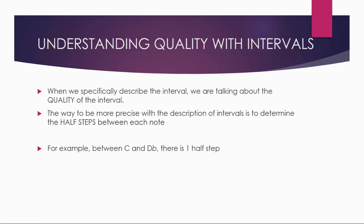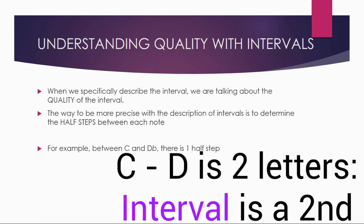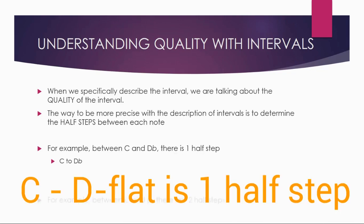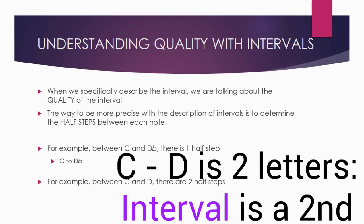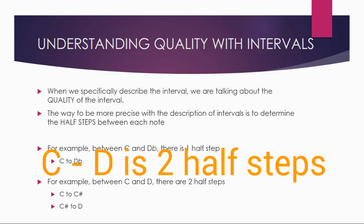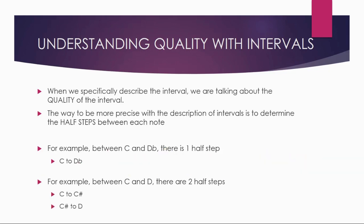So we'll start real easy. Between C and D flat there is one half step. C to D flat — so C to D means it's a second. C to D flat means one half step. Going a little bigger, C to D is still a second — C, D, just two notes — but there are two half steps: C to C sharp, and C sharp to D. So even though it's a second, the half steps make a difference.